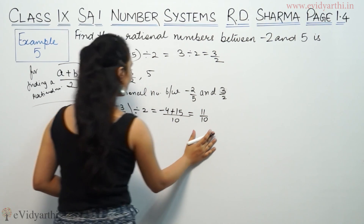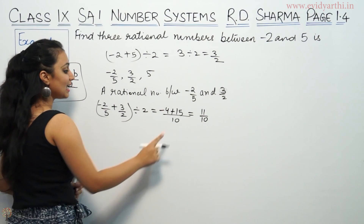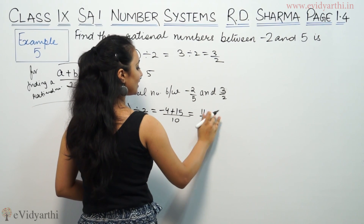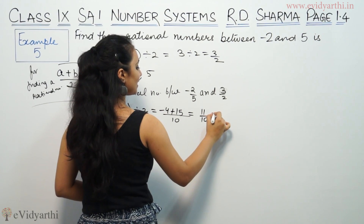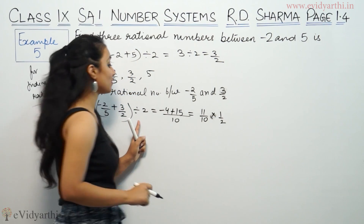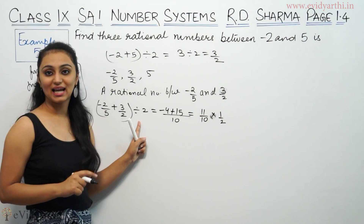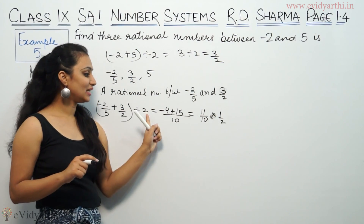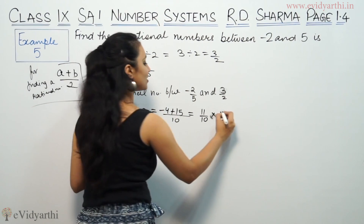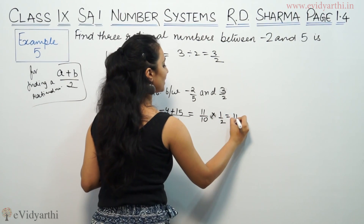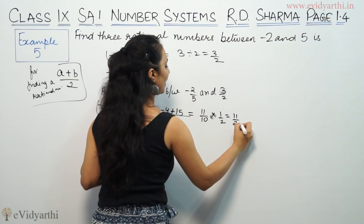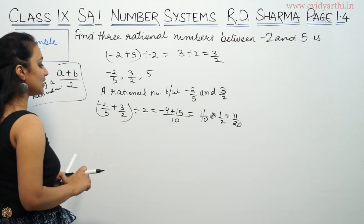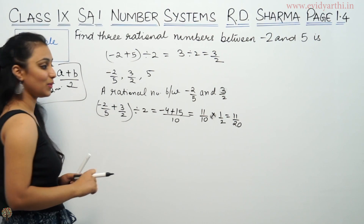So 11 by 10 is a rational number. Now divide by 10 and multiply — if we divide by 2, this will be 11 by 20. So 11 by 20 is a rational number between minus 2 by 5 and 3 by 2.